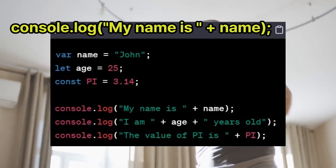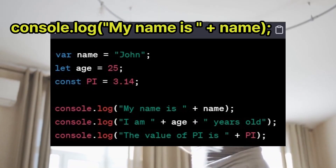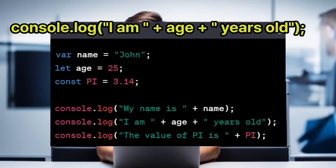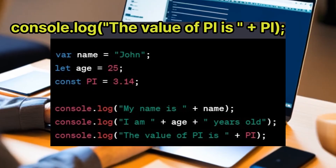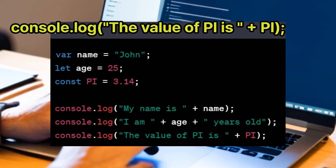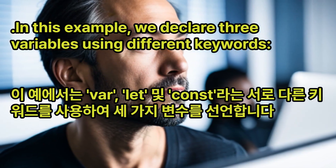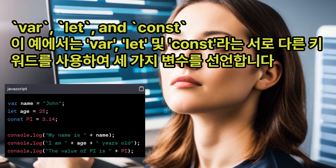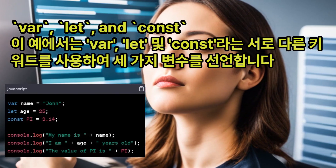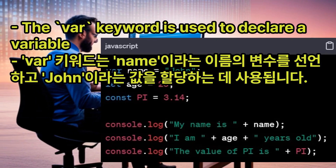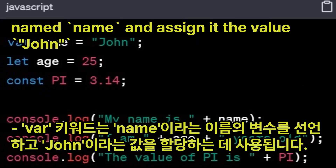console.log('My name is', name); console.log('I am', age, 'years old'); console.log('The value of pi is', pi). In this example, we declare three variables using different keywords: var, let, and const. The var keyword is used to declare a variable named name and assign it the value 'John'.